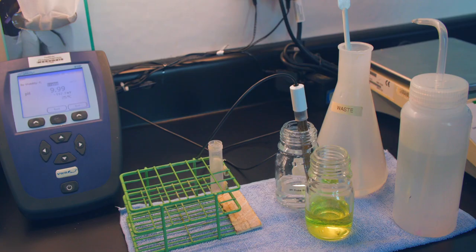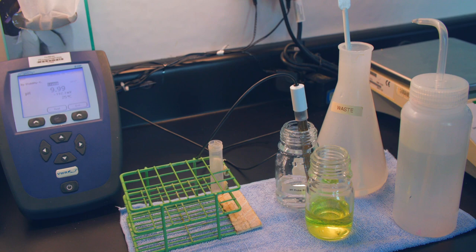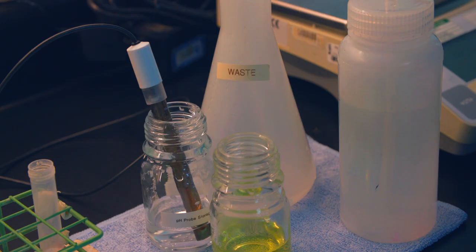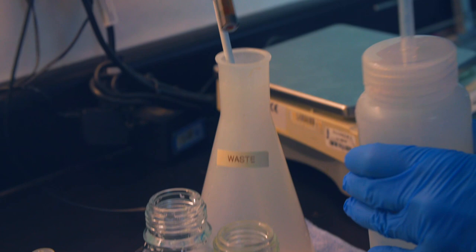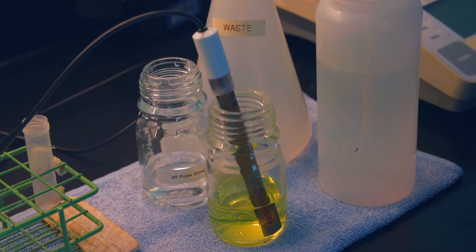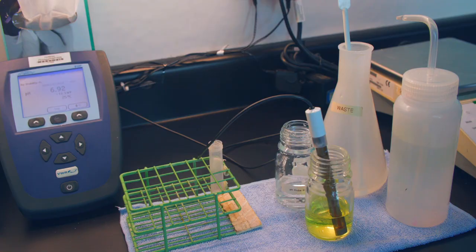Now you are ready to take a pH reading of your culture media. If the probe is resting in the storage solution, remove and rinse with deionized water over a waste beaker, then place the probe into the pH 7.00 buffer and gently stir to remove any bubbles. Alternatively, if the probe is already resting in the pH 7.00 buffer, you can skip these steps.